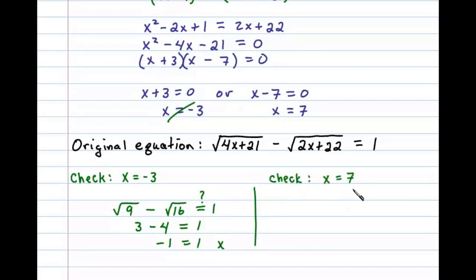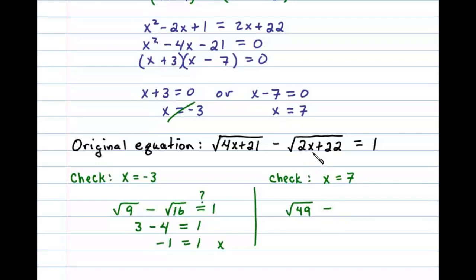Next we'll check x equals 7. Substituting 7 into the original equation, we have 4 times 7 which is 28, plus 21, leaving us with the square root of 49. And 2 times 7 is 14, plus 22 is 36, so we have the square root of 36.